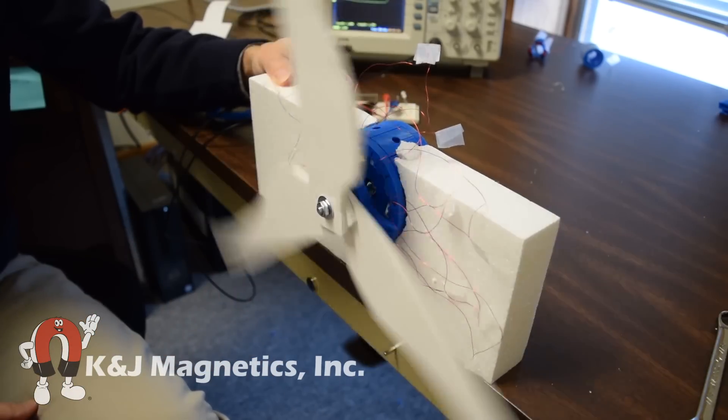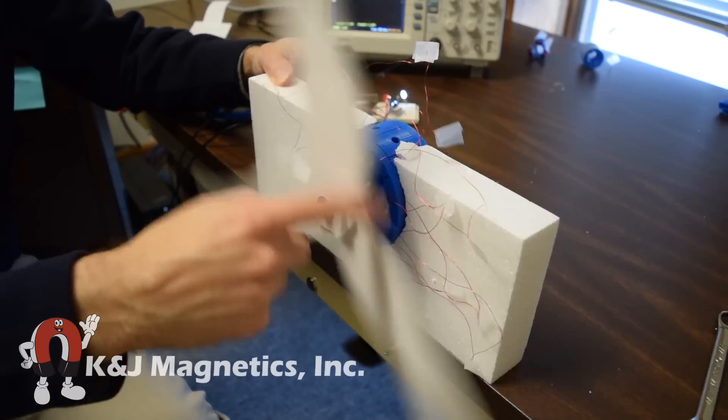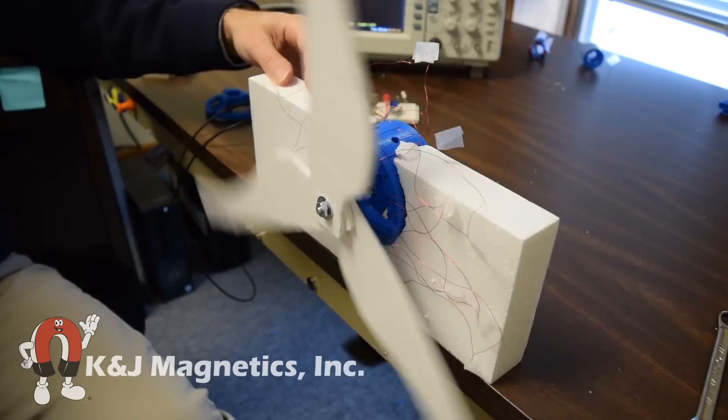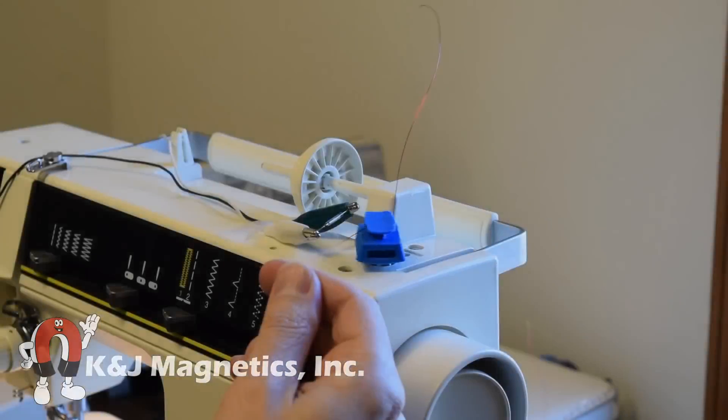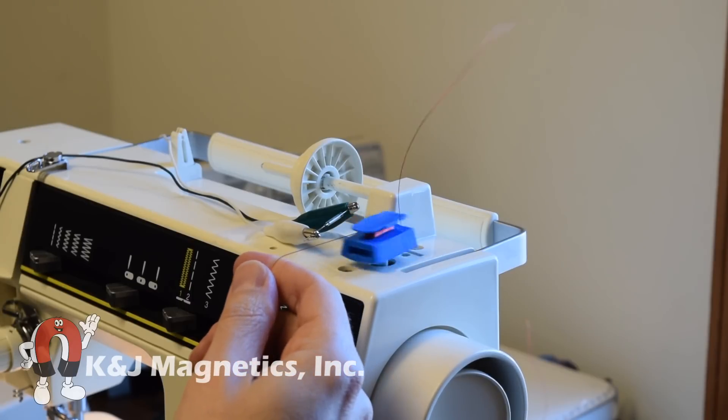Here's our final 3D printed prototype using very similar ideas from that real windmill. We wound 12 coils with magnet wire. This is 30 gauge magnet wire which is lightly insulated wire.